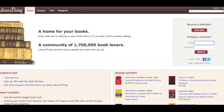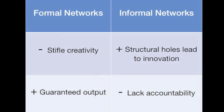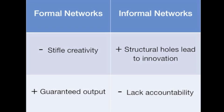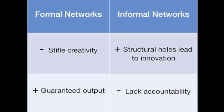So in comparing these two, formal networks can stifle innovation since they're closed and information tends to become redundant, but the structure results in guaranteed quality output. Informal networks involve weak ties or structural holes that facilitate new information and ideas, but they lack accountability to generate output.